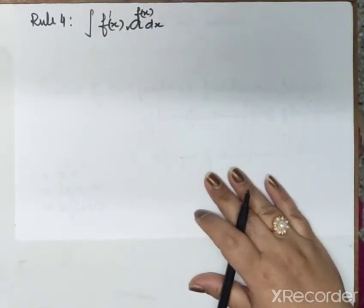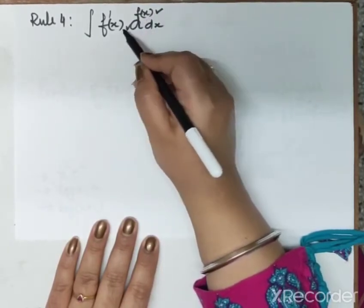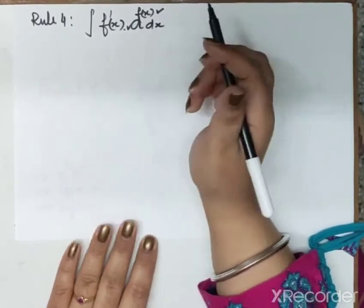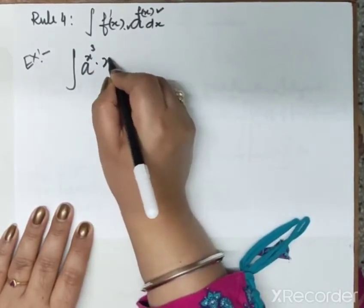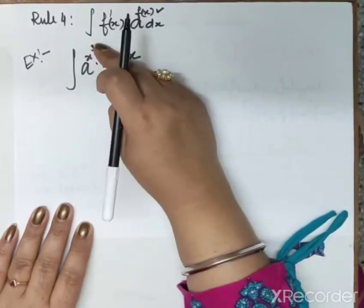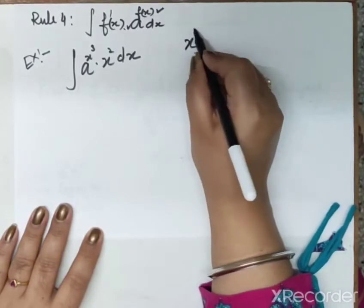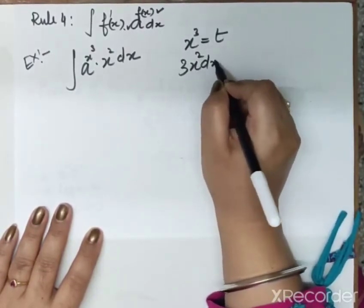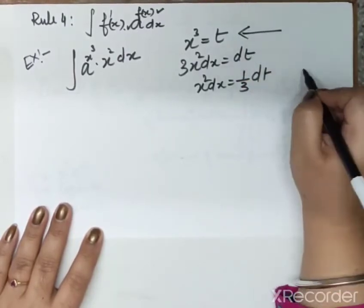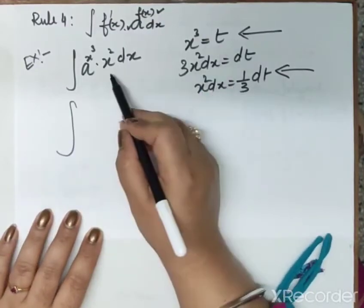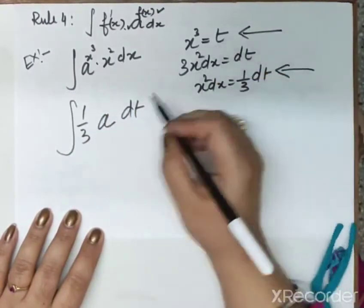Now Rule 4: if we have a^(f(x)) — where a is the base and f(x) is the main function as the power — and alongside it is multiplied by its derivative, how do we solve the question? Let us take an example: integrate a^(x³) · x² dx. You can clearly see that the derivative of x³ is 3x², so x² is in the form of the derivative.